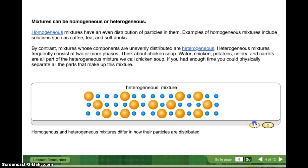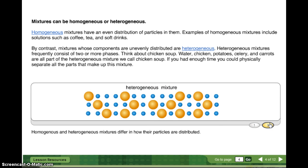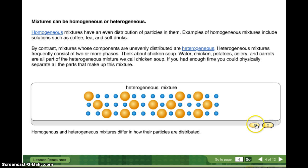All right, so if we look here, we have a homogenous mixture. You can see that everything is evenly distributed. It's a really nice pattern. Here is heterogeneous. You can see that there's more of the orange in some areas, less in other areas. So homogenous and heterogeneous mixtures differ in how their particles are distributed.